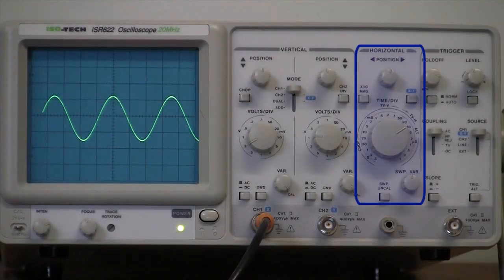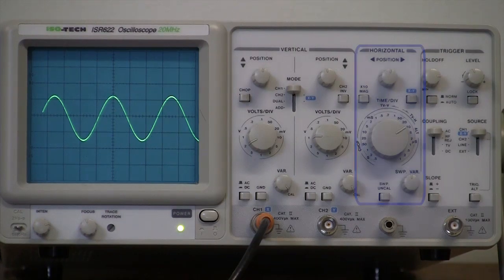The set of controls in the middle of the oscilloscope vary the position and scaling of the horizontal or time axis of the signal displayed on the oscilloscope's screen.